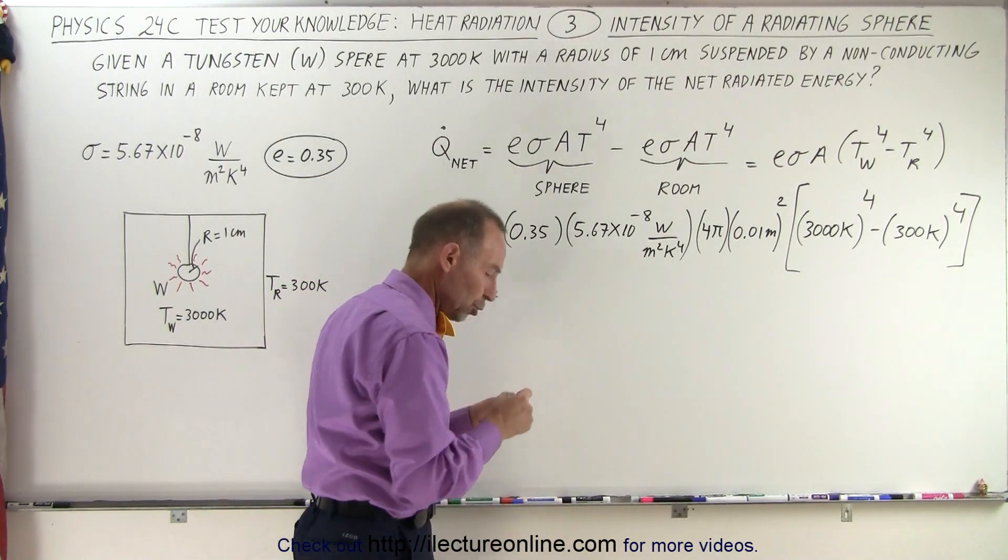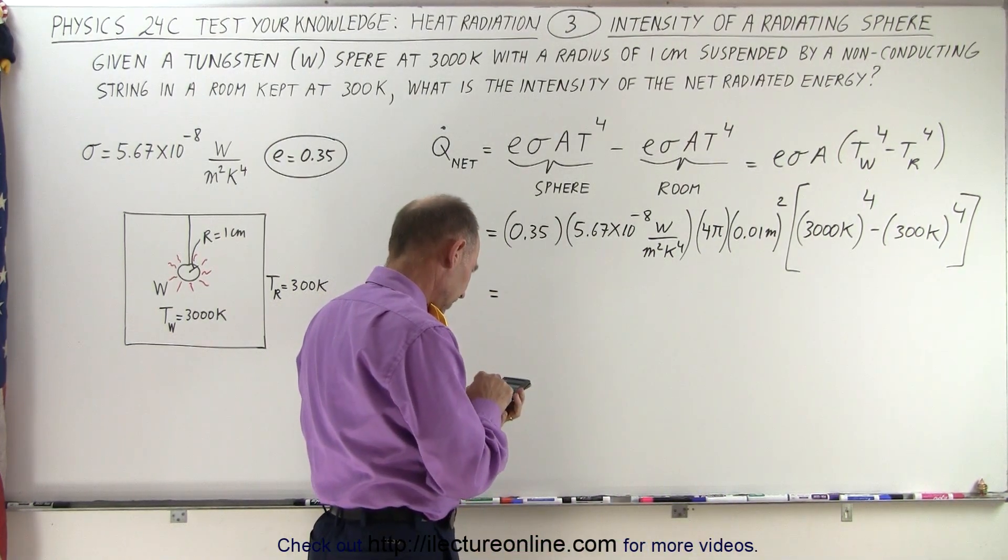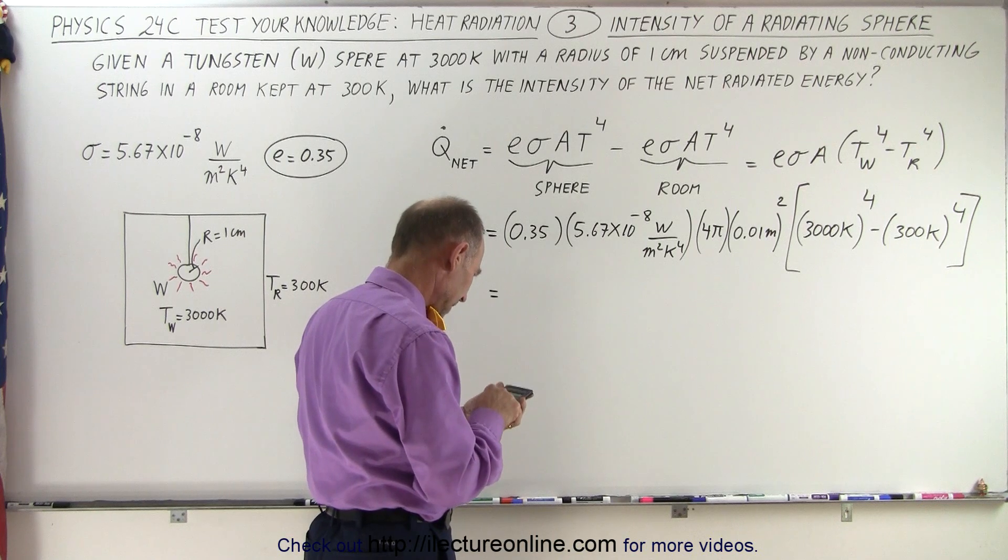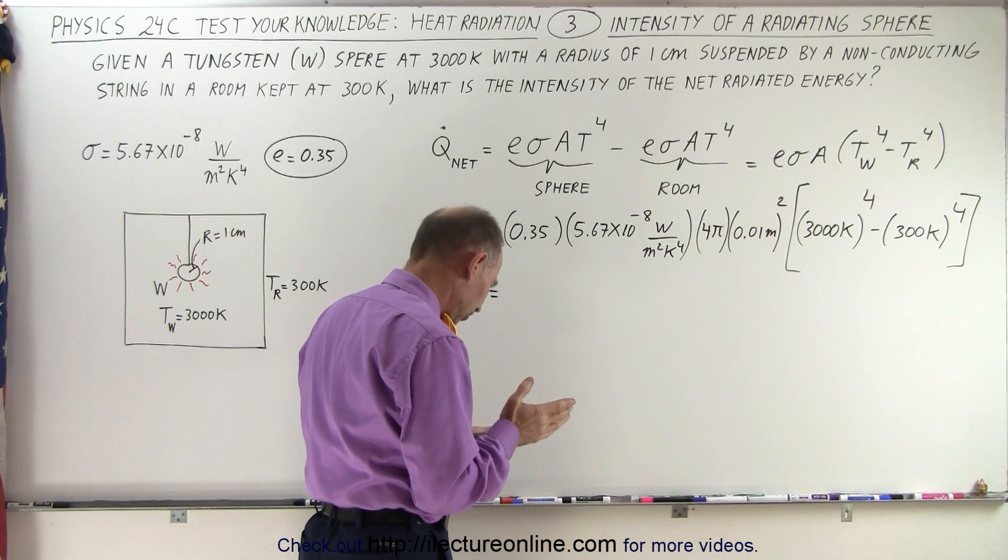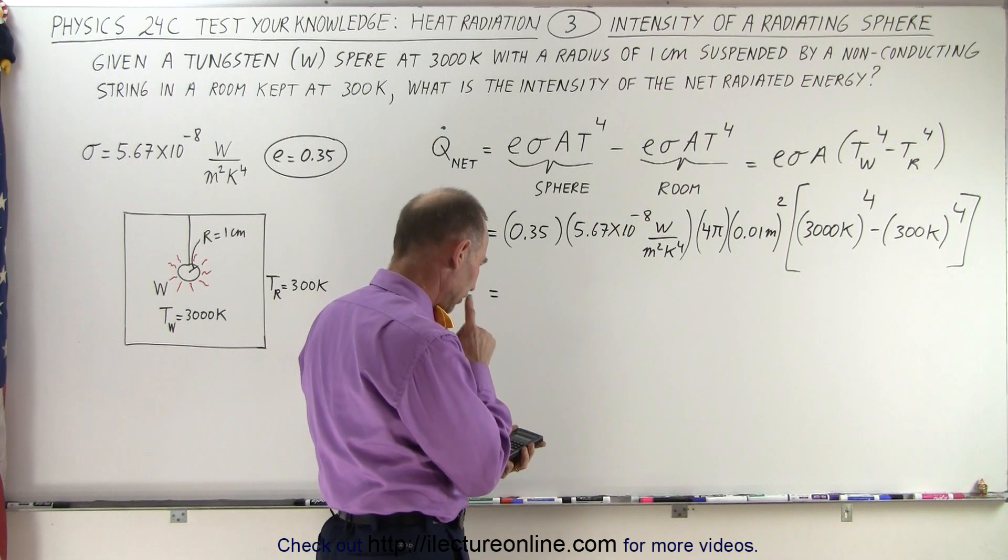All right, so this is equal to, let's see, 3,000 squared squared minus 300 squared squared equals, that number is virtually equal to 8.1 times 10 to the 13th.